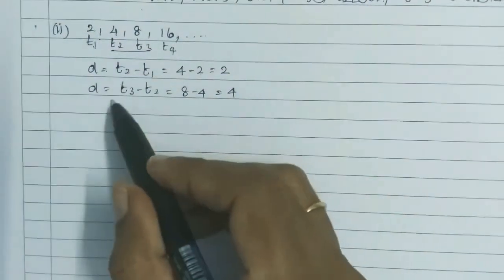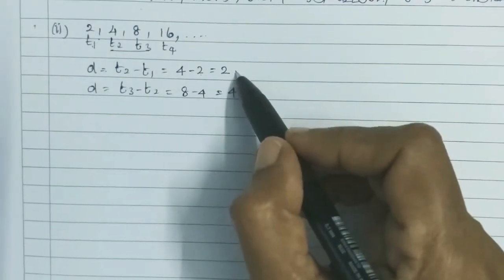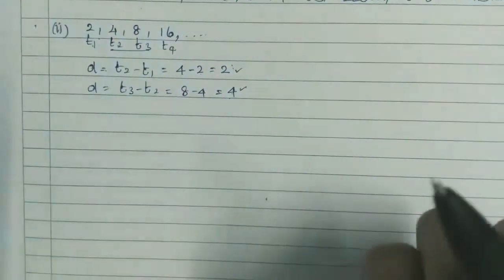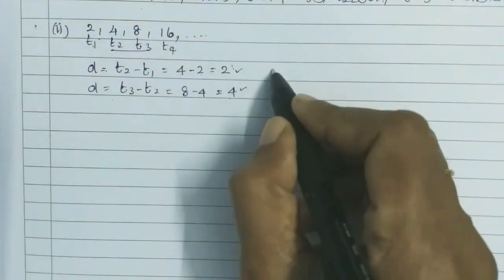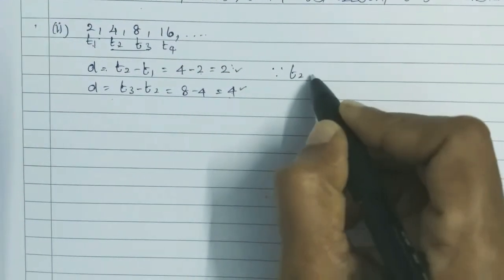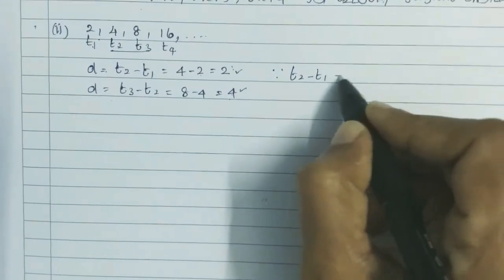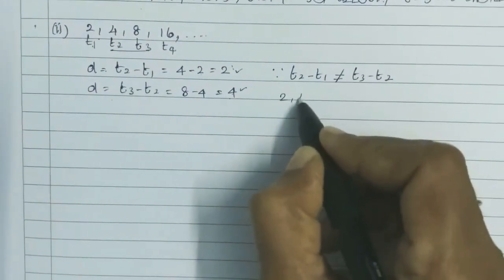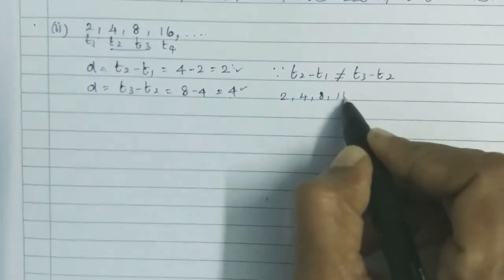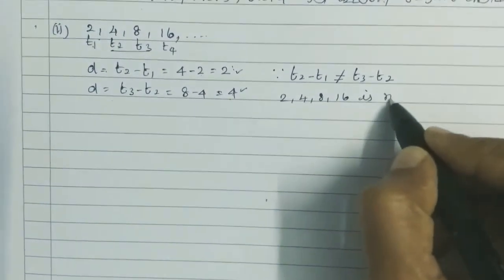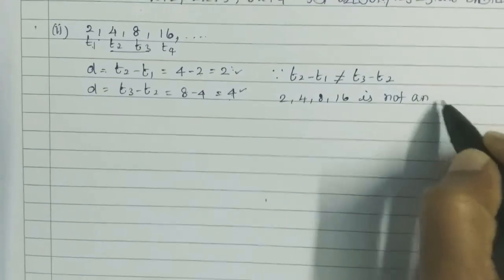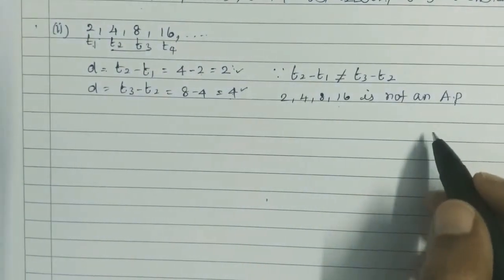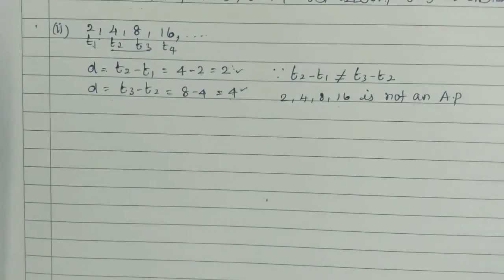If we compare this, we have 2 and 4. The differences are not equal. Therefore, since T2 minus T1 is not equal to T3 minus T2, the sequence 2, 4, 8, 16 is not an AP.